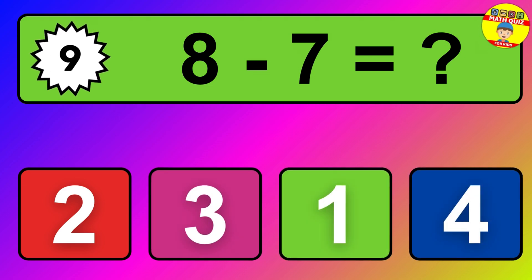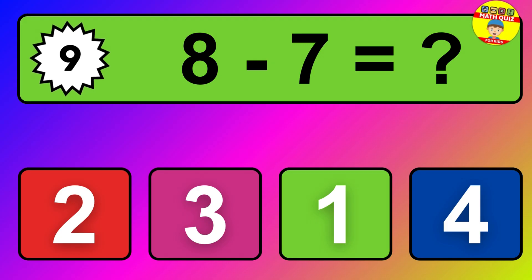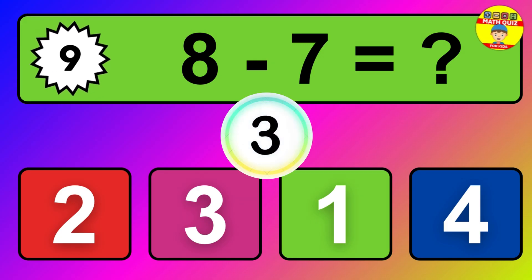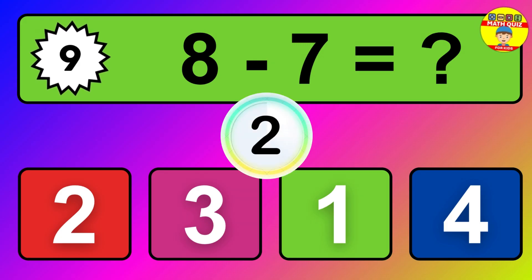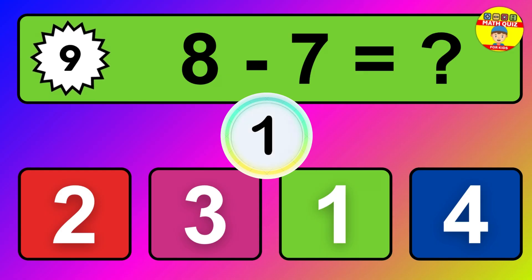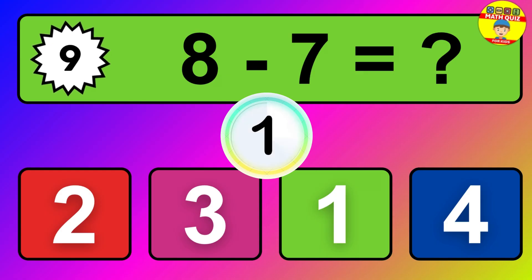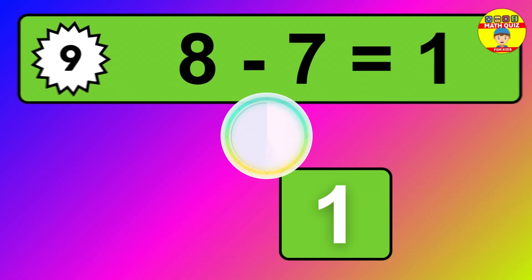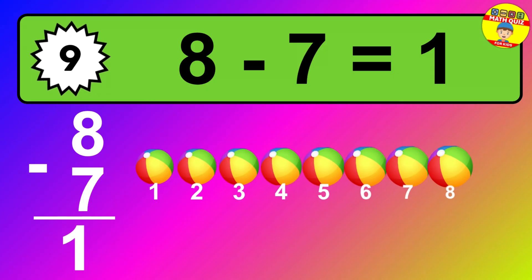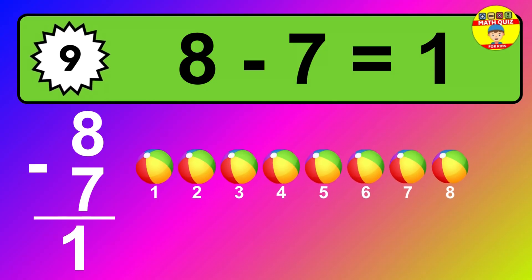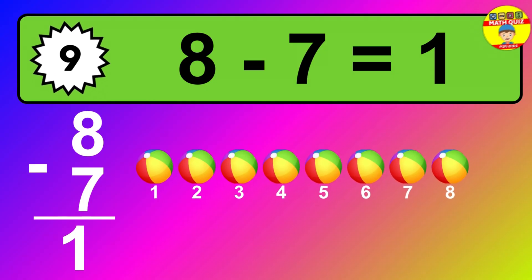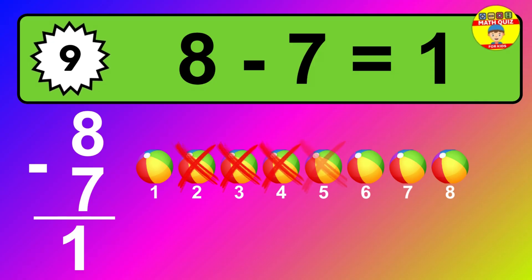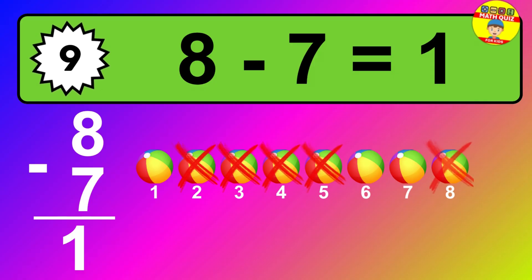Question nine: eight minus seven equals what? So the answer is eight minus seven is one. Let's count it: one.